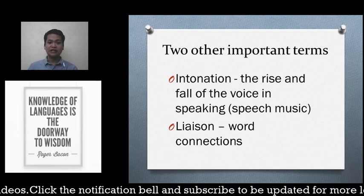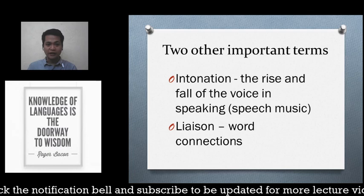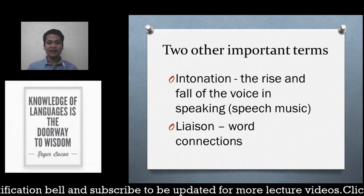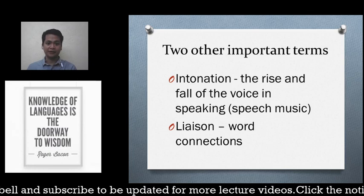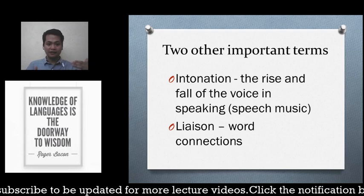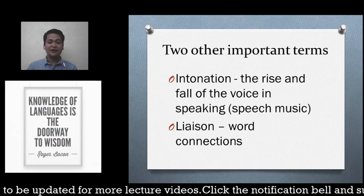The other term is liaison, or word connections. In English, we do not speak word per word — we connect sounds between words. For example, we would not say 'the... apple... is... ripe' but rather 'the apple is ripe,' connecting 'the' and 'apple' with a 'y' sound in between.